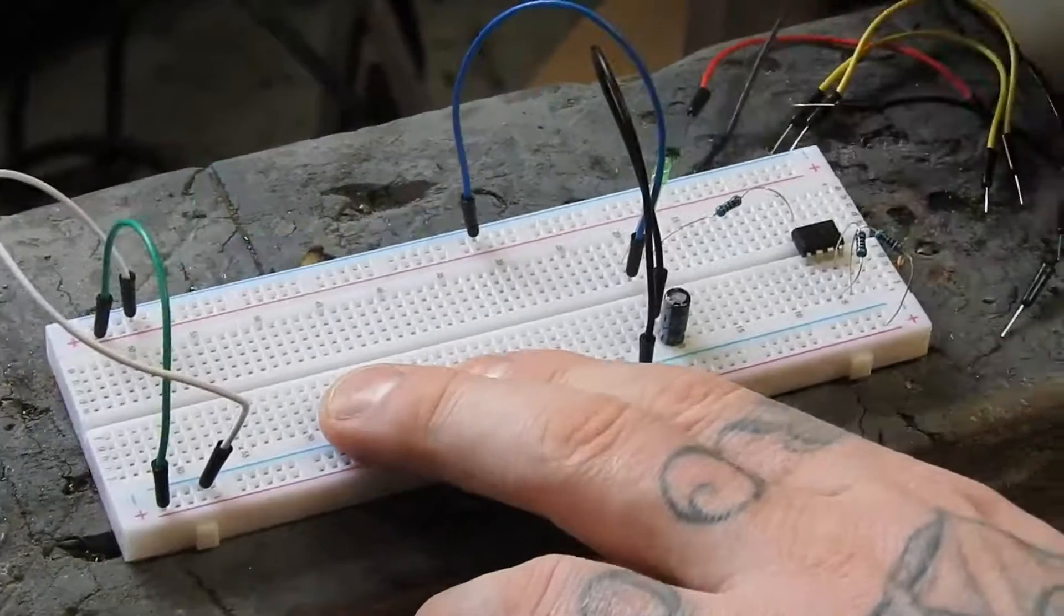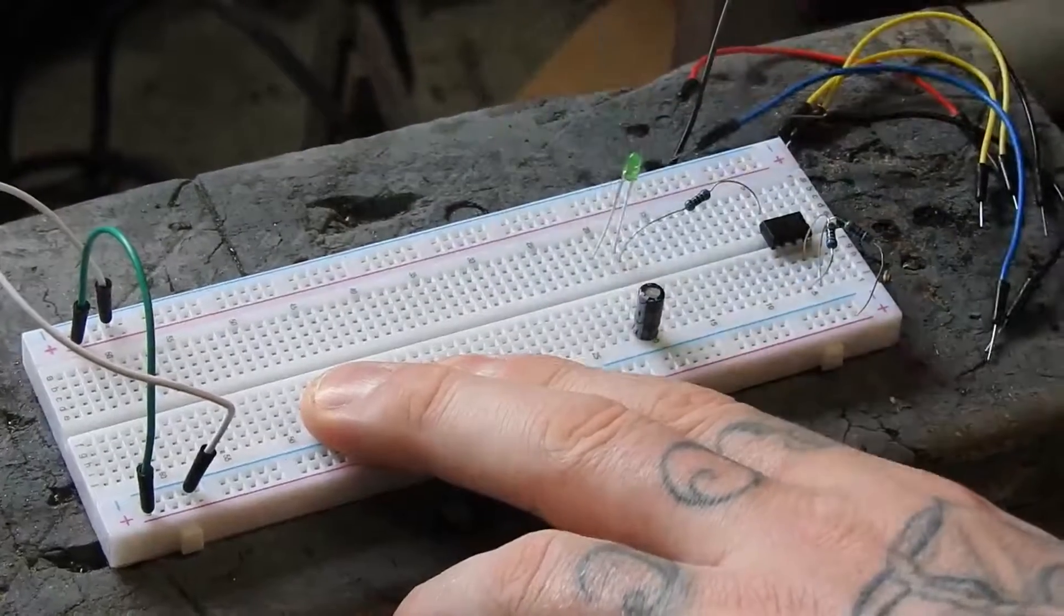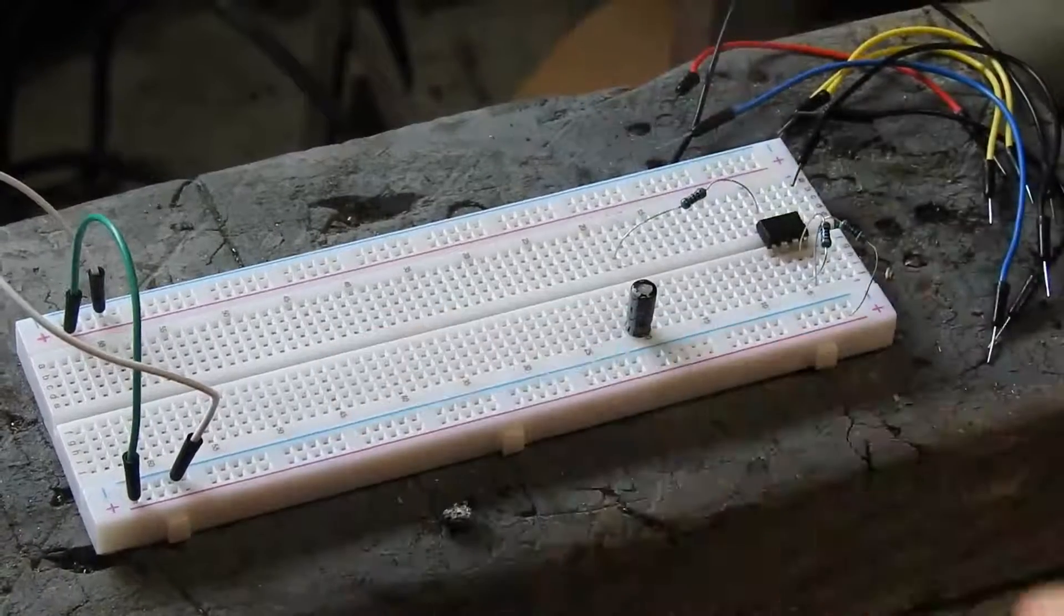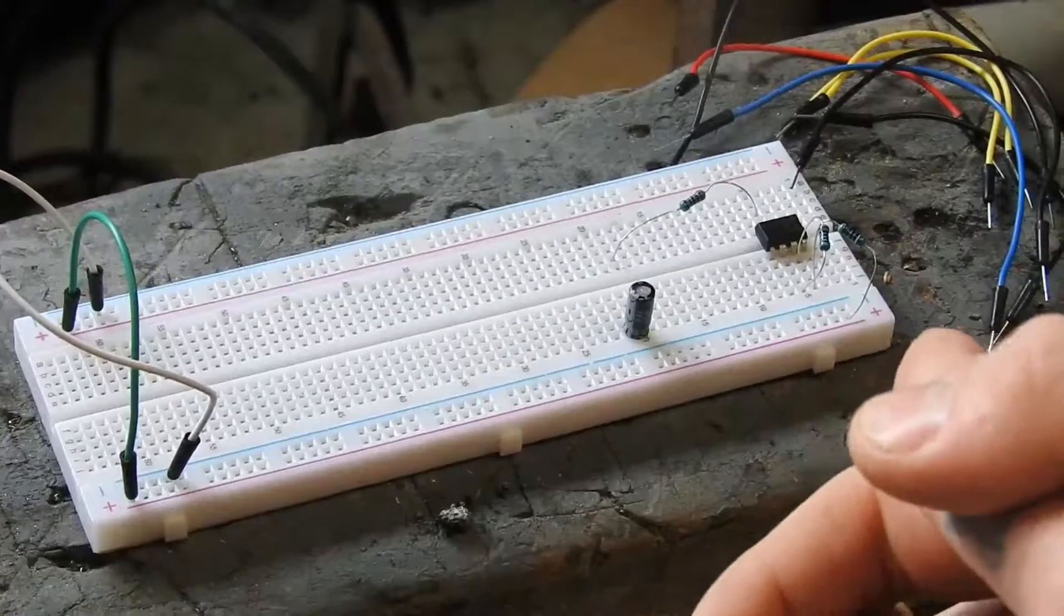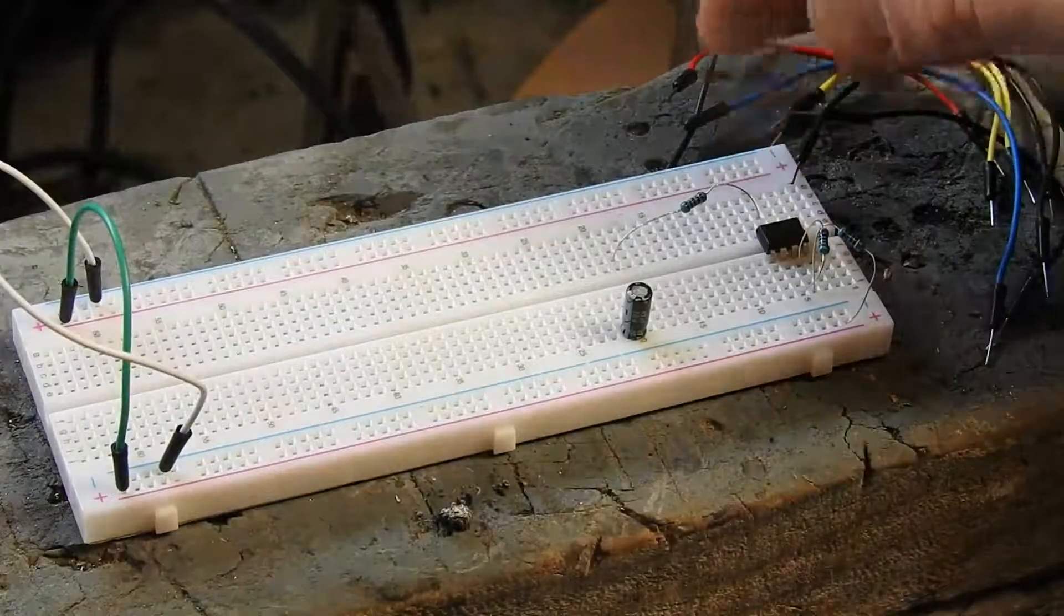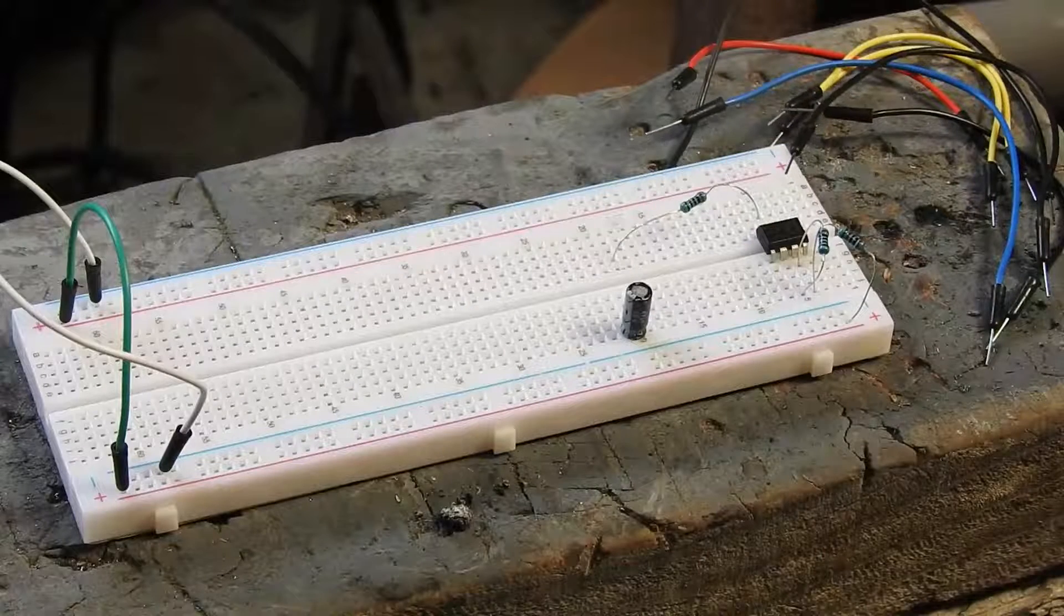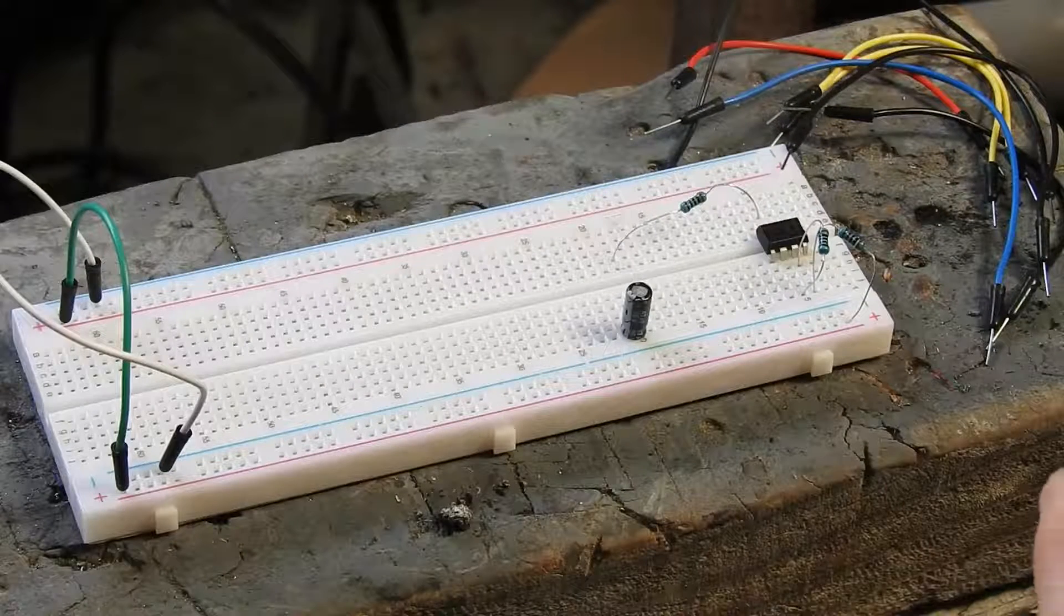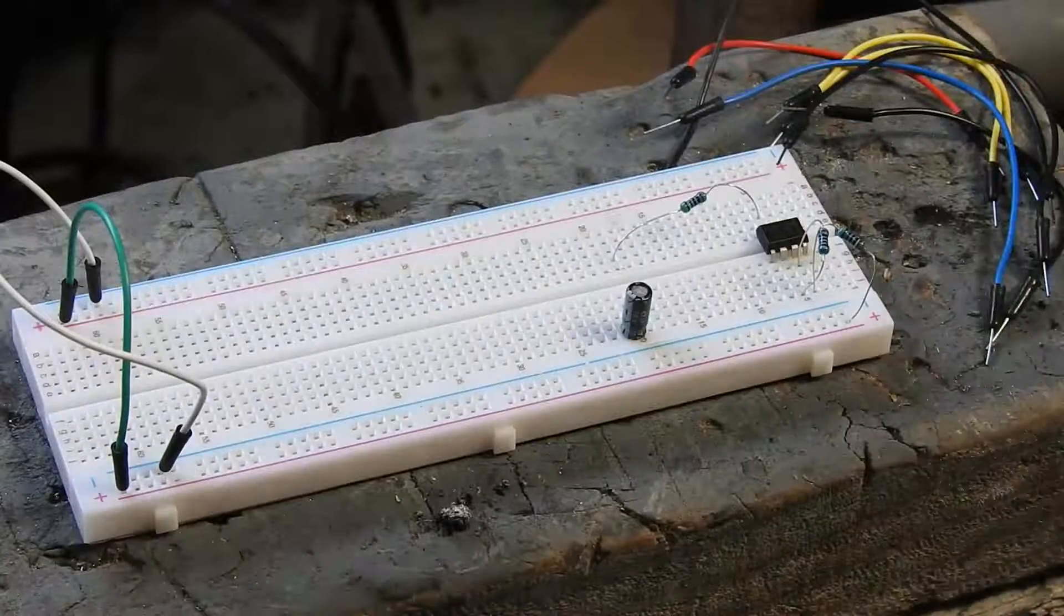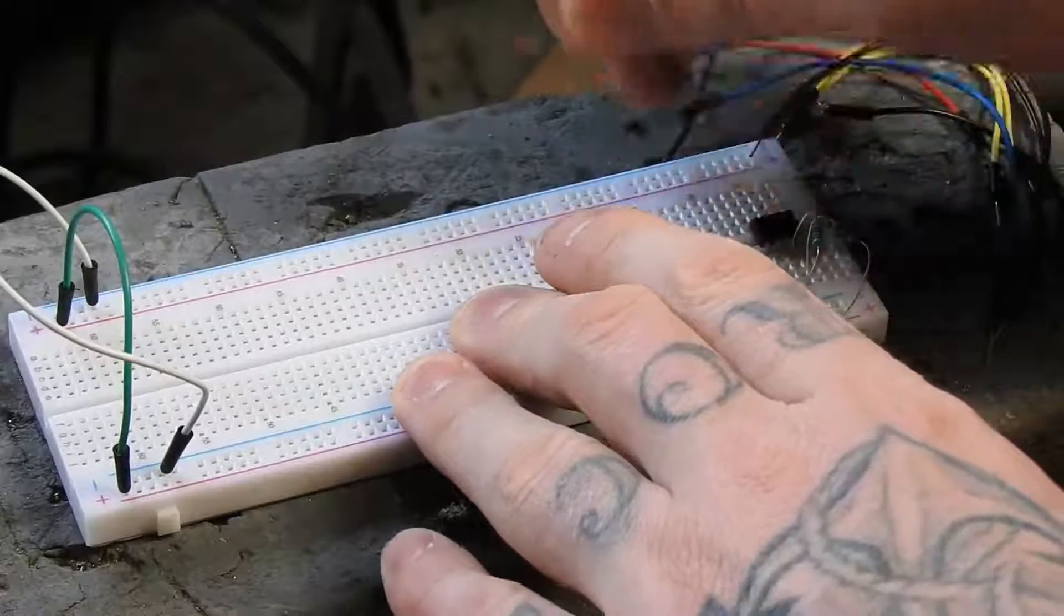So just some jumper wires, a few LEDs, some resistors. I'm using 2k resistors for the LED and you could probably go a lot lower than that. If you have like a 100 ohm resistor it's gonna be a lot brighter, but I don't have any at the moment.